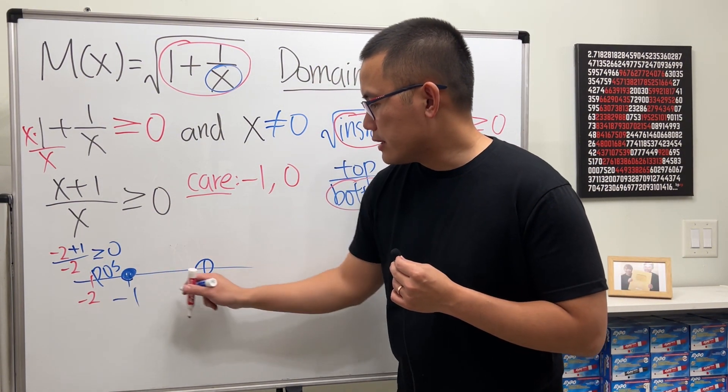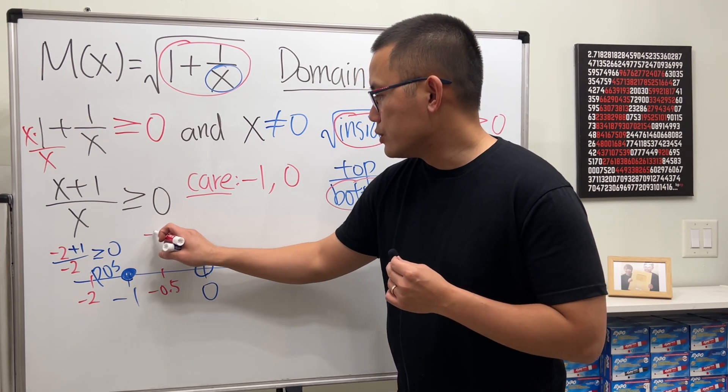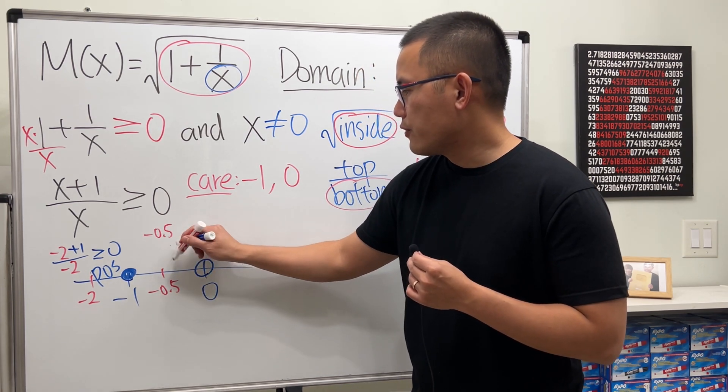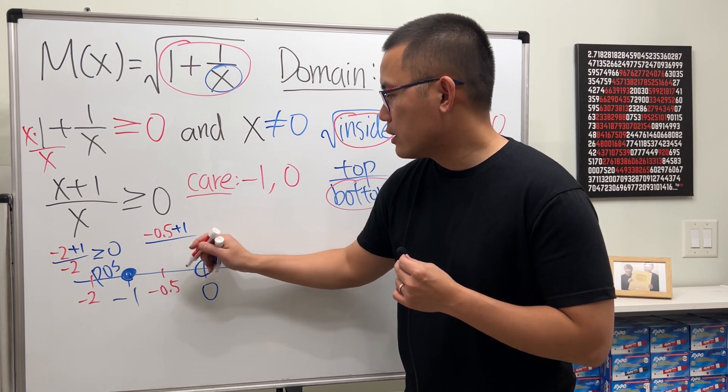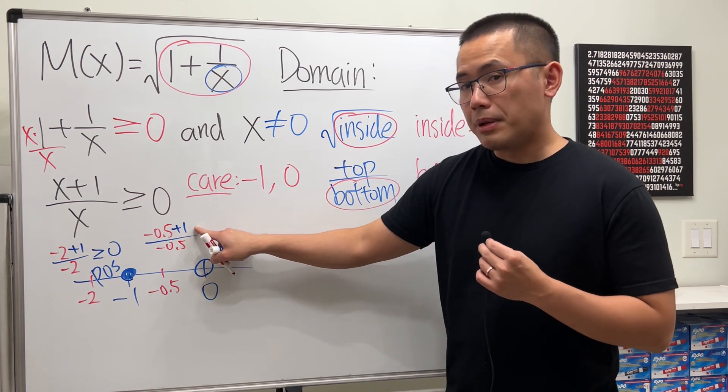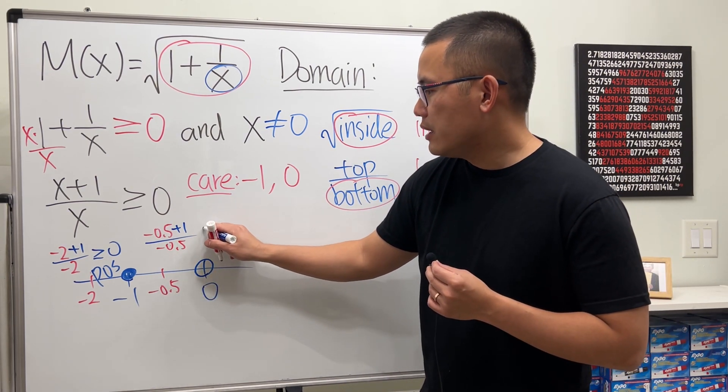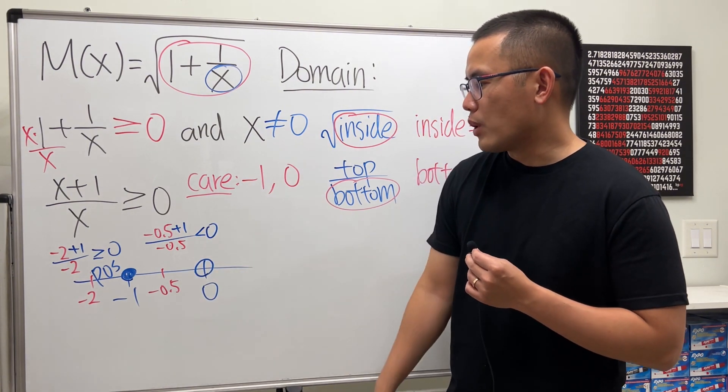And let's pick a number between this and that. Let's say negative 0.5. And we just plug in negative 0.5 plus 1 over negative 0.5. Well, the top is going to be positive 0.5. The bottom is negative 0.5. So this right here is going to be a negative result. So that's not what we want.